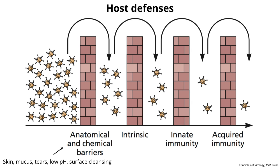Today we're going to consider intrinsic and innate defenses. There are a series of brick walls that viruses have to overcome in order to be successful at replicating in the host. The first wall is called anatomical and chemical barriers. We talked about the skin's outer layer being dead and not able to be infected, mucus that clears viruses from the respiratory mucosa, tears washing away particulate matter including viruses, and the low pH of the skin. These are physical, anatomical, and chemical barriers, and they stop a lot of viruses at the onset.